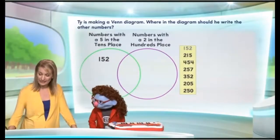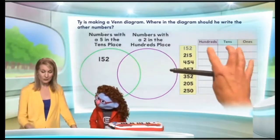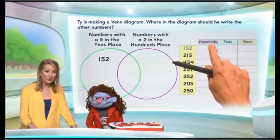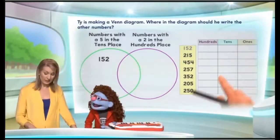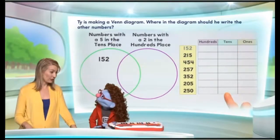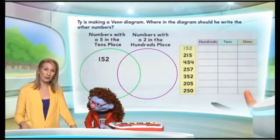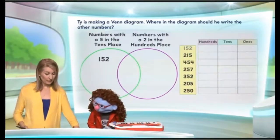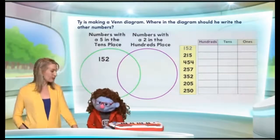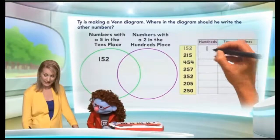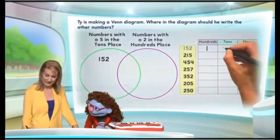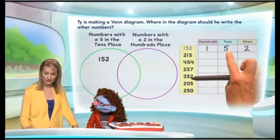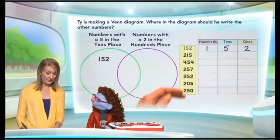I'm going to bring in a table here, and we're going to organize each of these numbers so that the digit in the hundreds place goes in the first column, the digit in the tens place goes in the second column, and the digit in the ones place goes in the third column. Let's start with the number 152. Number 152 has what number in the hundreds place? One. And what is in the tens place? A five. And what is in the ones place? A two. Well done! So 152.